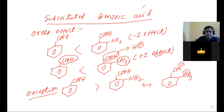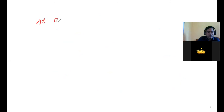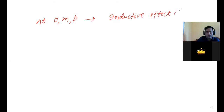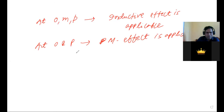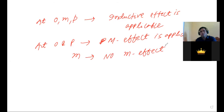An important rule to remember: the inductive effect is applicable at ortho, meta, and para positions. However, the mesomeric effect (M effect or resonance effect) is applicable only at ortho and para positions. There is no mesomeric effect at the meta position.